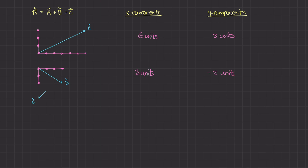And finally for vector C, we start at the tail and go to the tip. In the x direction, it's going one unit to the left, so that's negative one unit. For the vertical direction, starting at the tail it goes one unit downwards, so that's negative one unit.